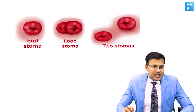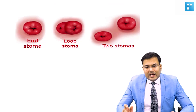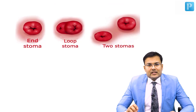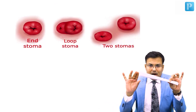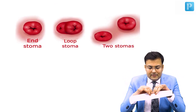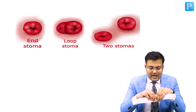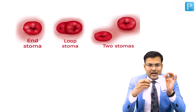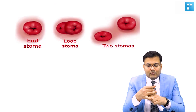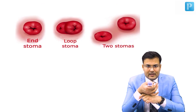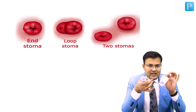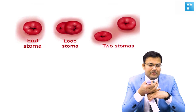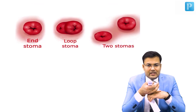There are three types of stoma: end, loop, and double barrel. In end stoma, the bowel is divided — the distal end is closed and kept inside the abdomen, and the proximal end is taken out. So there is only one external opening. This is end ileostomy if it is ileum, or end colostomy if it is colon.